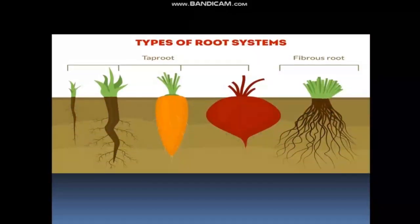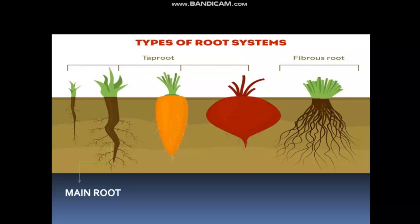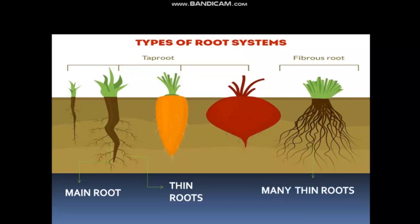There are two types of root systems: the tap root system and the fibrous root system. In a tap root system, there is one single main root with many small roots coming from it. Whereas in a fibrous root system, there are many small roots in a bunch.